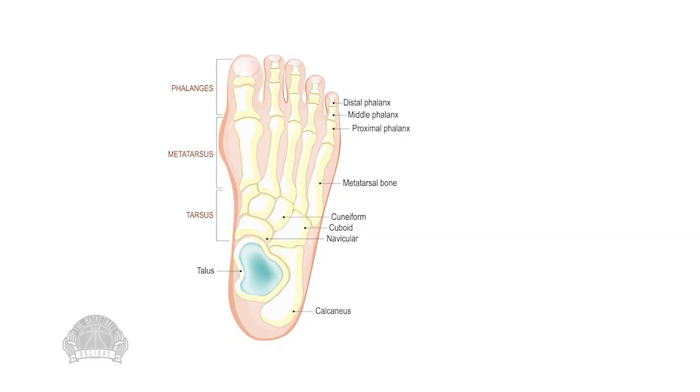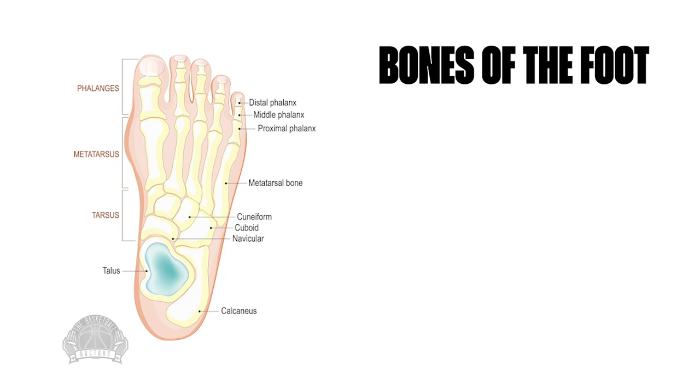Now let's jump into his current injury — a midfoot sprain. Before going further, let's break down the anatomy. As you can see in this picture, there are bones in the middle portion of your foot. We have our toes, then our ankle joint, and then the midfoot, which contains three cuneiforms, the navicular, and the cuboid — five little bones in the mid portion of the foot. Every bone is connected by ligaments to keep them stable, so those midfoot ligaments connect those bones together.